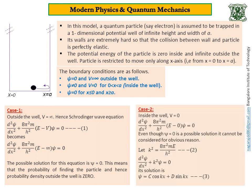Now let us take case two: inside the well. Inside the well, V equals zero, so there is no potential energy for the particle. The Schrodinger wave equation takes a simpler form with V equal to zero. Again, psi equals zero is a possible mathematical solution, but we cannot accept it. If we accept psi equals zero, it means there is no particle inside the well — but the particle is very much inside the well. Therefore, psi equals zero cannot be considered a solution here.